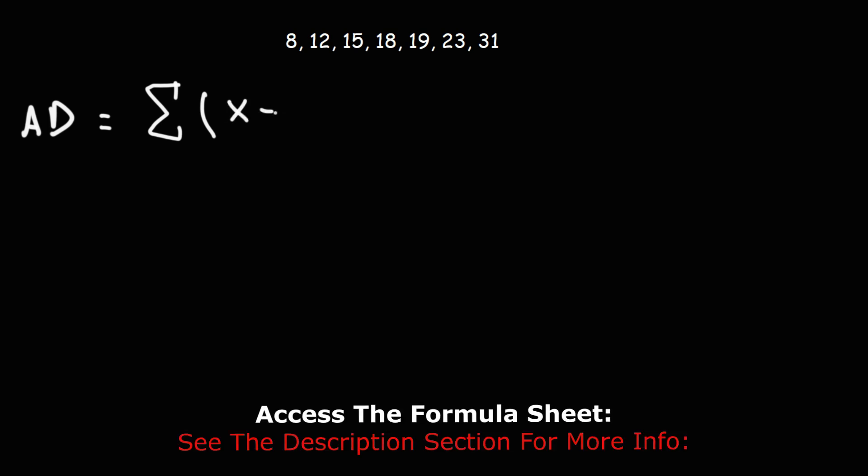Consider the data shown on the screen. How can we calculate the average deviation? The average deviation, here's the formula. I'm going to use AD to represent it. It's the sum of each data point minus the mean divided by n.